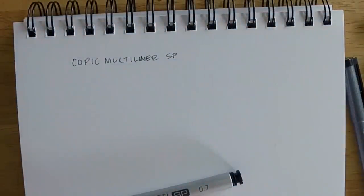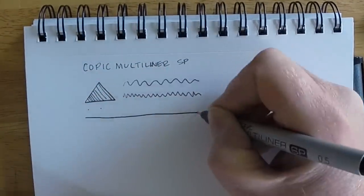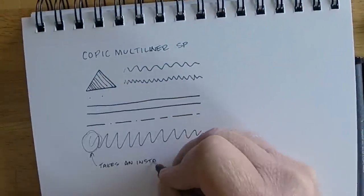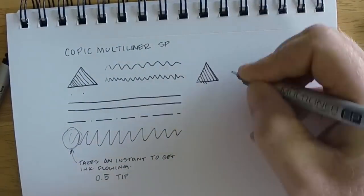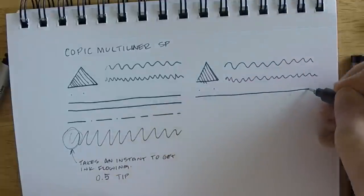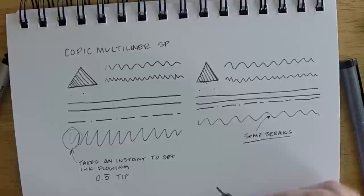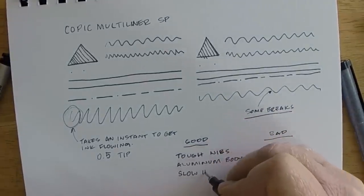Next is the aluminum body Multiliner SP, which is my go-to pen and the one I tend to use a lot when I'm doing ink work. It works really nice for the most part, although I draw a little slower and I do my line work a little slower. I notice when I do it faster here I get a little skipping, and it took an instant or two for the ink to get flowing. Once it's flowing in the pen, it tends to work pretty good.